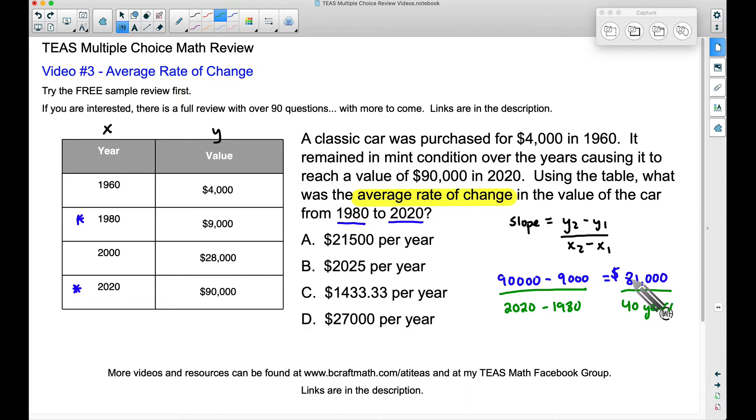Check out what we have in this fraction. We have dollars per and then we have year at the bottom. If we take $81,000 and we divide by 40 years, we're going to get a value that is equal to $2,025 per year. This is the answer to our question.